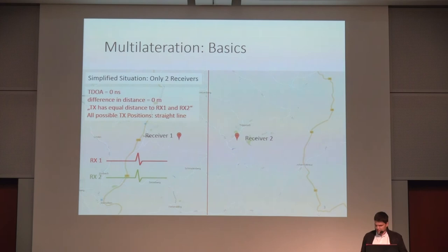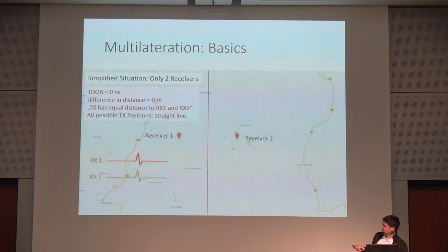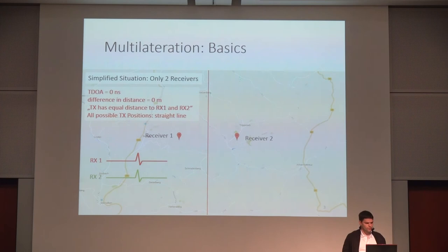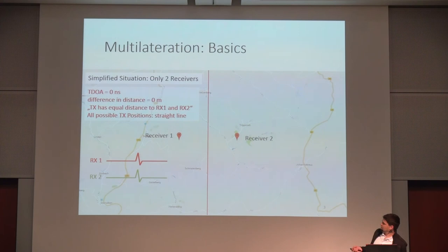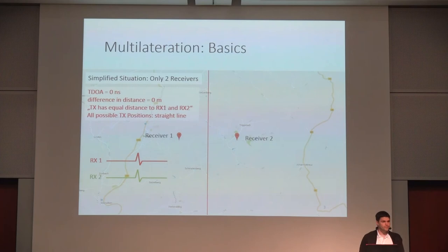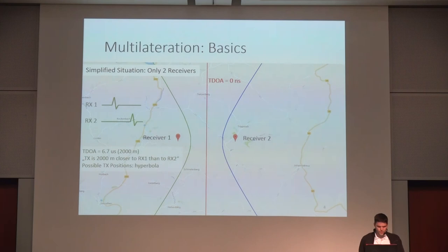To get a better understanding, we start with a very simple example with only two receivers. Let's assume the signal arrives at both receivers at the same time, so the TDOA here would be zero seconds. The statement you can gain from that is that the transmitter must have an equal distance to both receivers, so it must be somewhere right in between. If you plot all positions that obey this statement you come up with a straight line, so the transmitter must be located somewhere on this line.